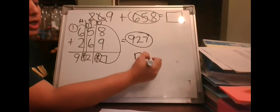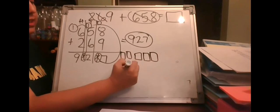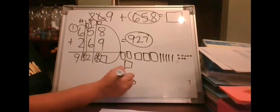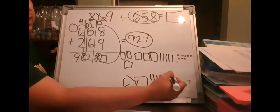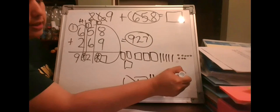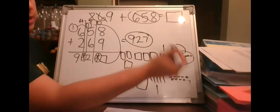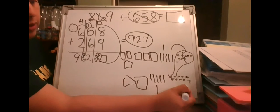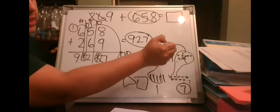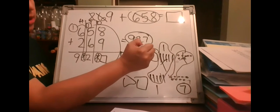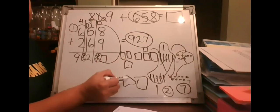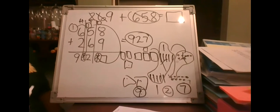Finally, using pictures: draw out the hundreds, tens, and ones for both numbers. When you have enough ones, they make a special 10; when you have ten tens, they make a special 100. After combining and regrouping, you're left with two tens and nine hundreds, giving an answer of 927.